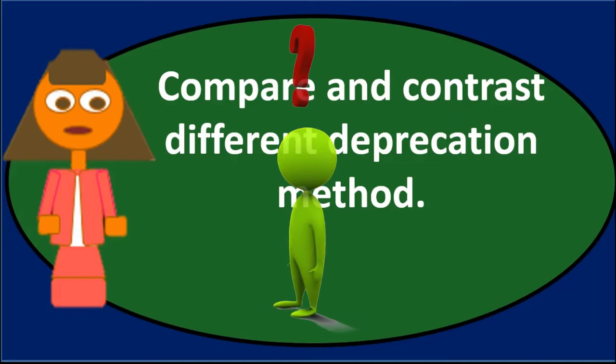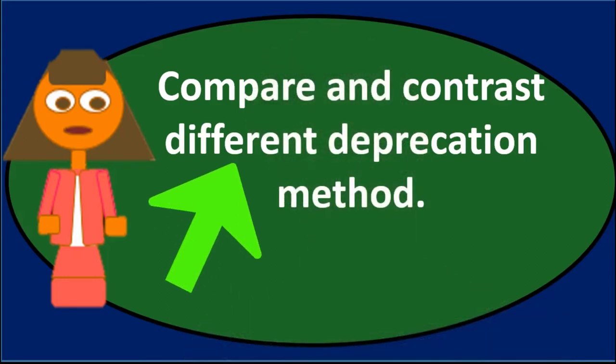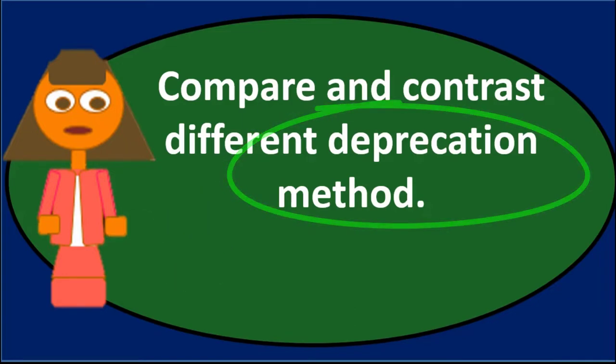So now we can also think of different types of methods as well. One would be an accelerated method. And this would be one where we might say, that makes sense if we allocate this over the useful life and have an even allocation, have the net income go down evenly based on the depreciation expense being even over the useful life.